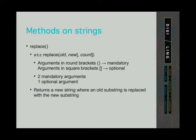The next method we can call on strings is the replace method. The syntax for this method is a little different — in the round brackets we have old, new, and count. The count is in square brackets. The arguments that are not in square brackets are mandatory. Those arguments have to be defined in order for the method to work. This means that the replace method has two mandatory arguments: old and new. The arguments in square brackets are optional and not needed for the method to work. The replace method has one optional argument: count.